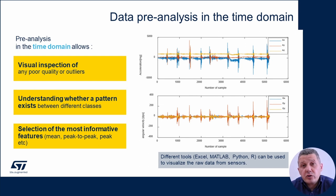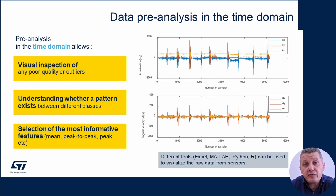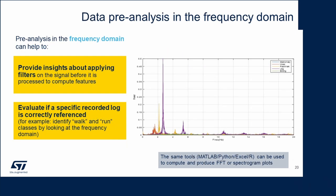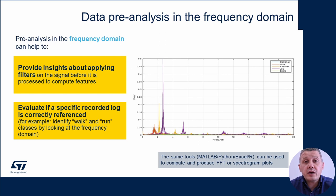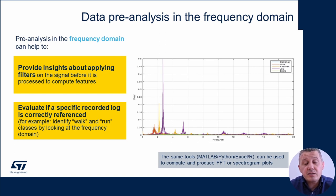A very important operation is data inspection, to identify any possible errors in the dataset, poor quality data, or outliers. We may check first in the time domain whether we can see patterns to recognize different classes, or if any feature like peak-to-peak or variance seems more informative. Another option is to analyze the data in the frequency domain — sometimes classes have a very peculiar frequency footprint, like in this example where we can easily recognize the walking class from the jogging or running class just by looking at the FFT of the data coming from the accelerometer.